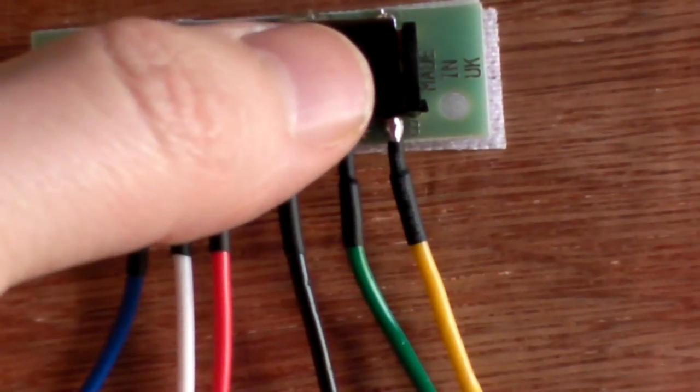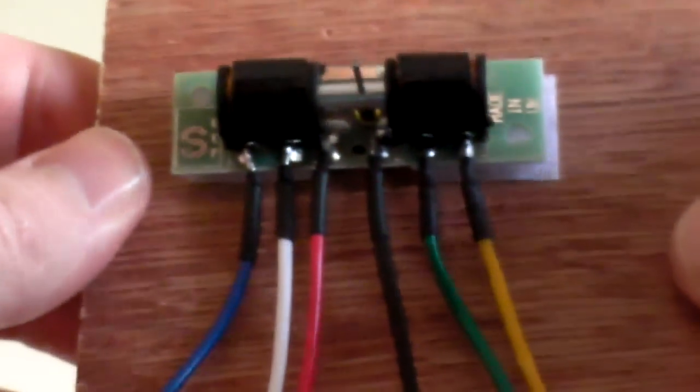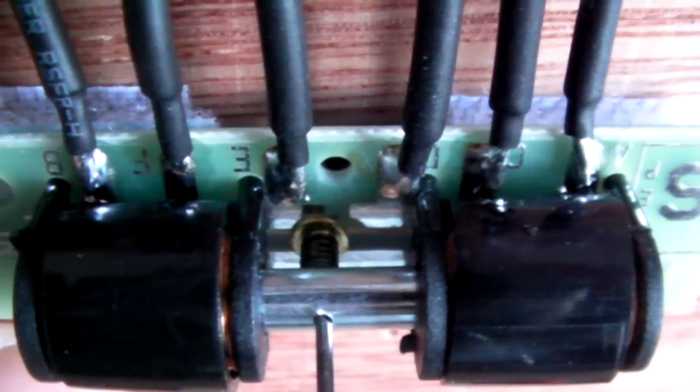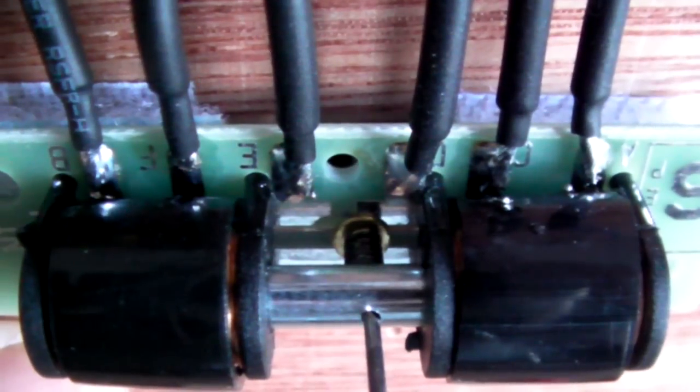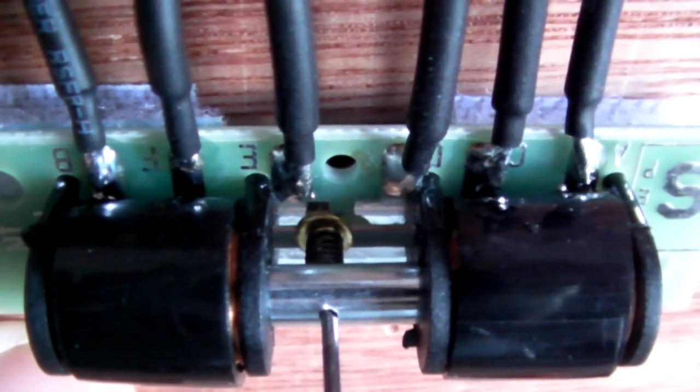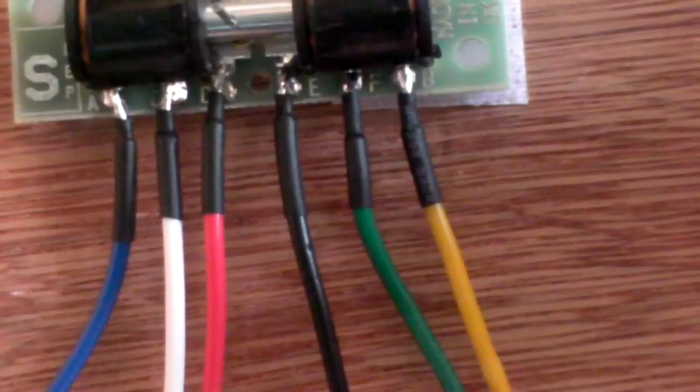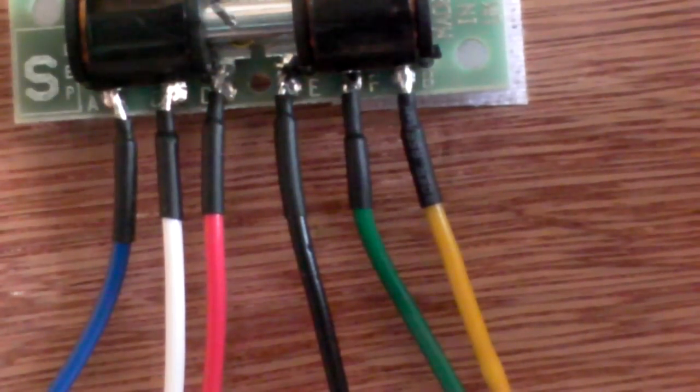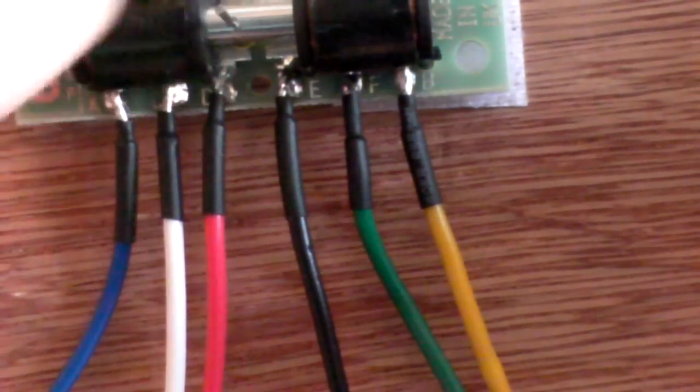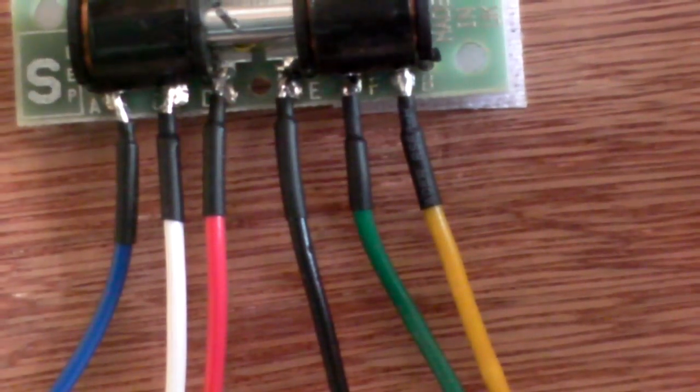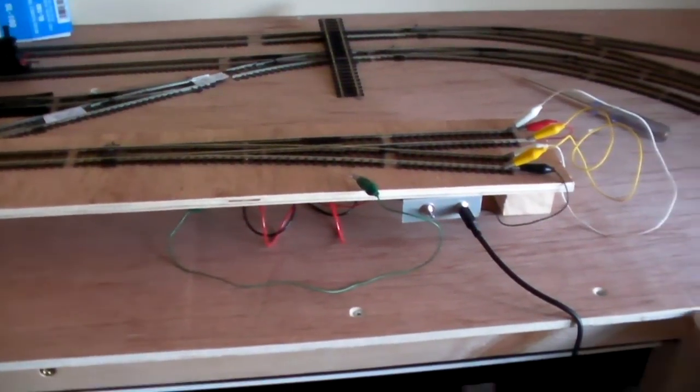What I also found is that where the switch moves over for the frog, you need to get that aligned properly so that when it throws, it completely clears the switch for each side of the power supply to the frog. That's the area that's most critical, more critical than the actual throw of the point, because the spring will tend to throw it completely over anyway. So it's the switch that's actually critical in positioning the point motor.